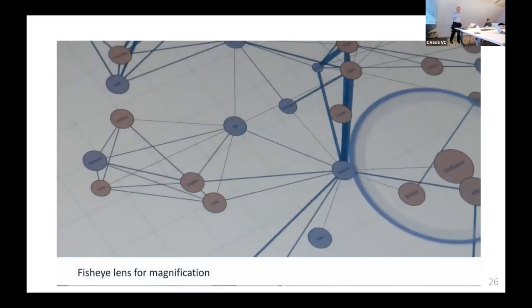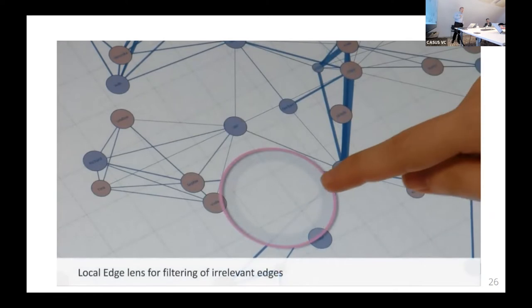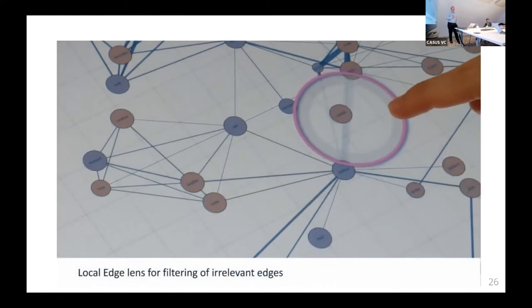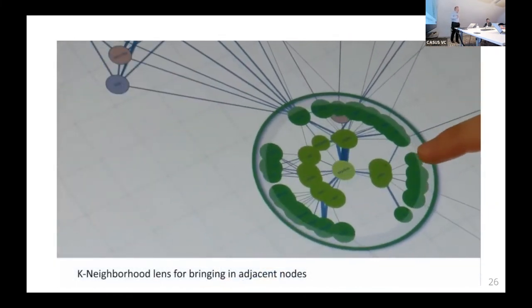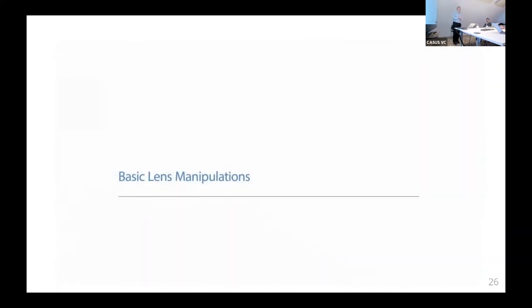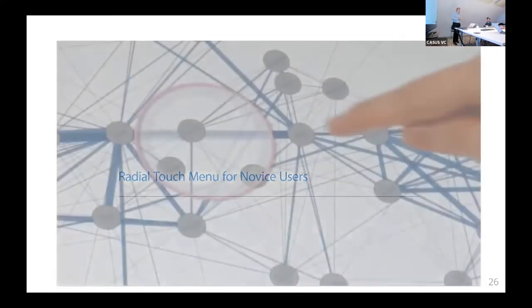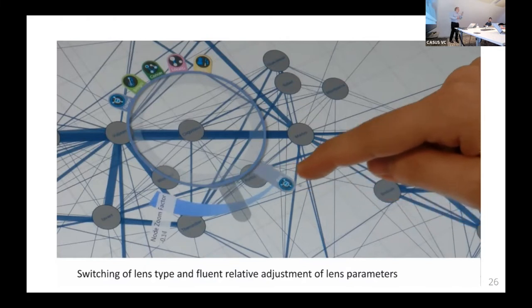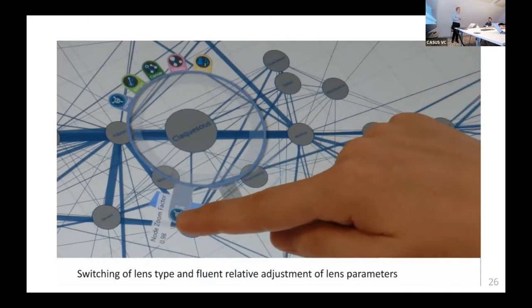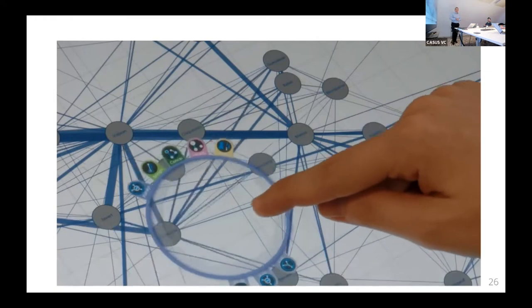Basically, this visualization lens — such as a magnification lens — can be moved around. That's still single touch. You can also have a local edge lens, which filters out irrelevant edges between two nodes, or a K-neighborhood lens that snaps adjacent nodes to the lens. You can use multiple fingers for interacting, and touch menus directly associated with the visualization lens — in situ at the place where the visualization actually happens, where the action is.